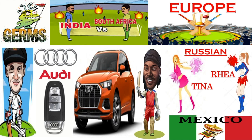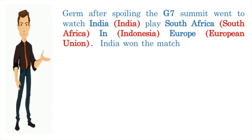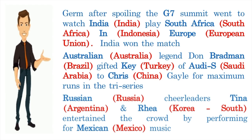This is the story — now let's connect it to the G20 nations. Members of G20 are: India, South Africa. 'In' becomes the clue for Indonesia. European Union is a member, followed by Australia. Bradman is the clue for Brazil. 'Ki' for Turkey. 'ODS' for Saudi Arabia. Chris for China. Next member is Russia. Cheerleader Tina stands for Argentina, and Ria for South Korea. Mexico is the 13th member.